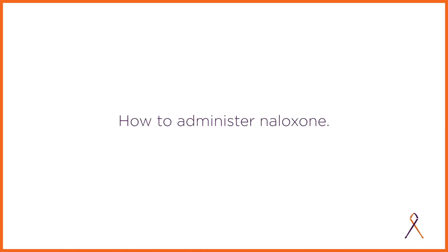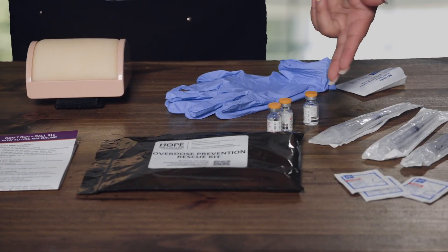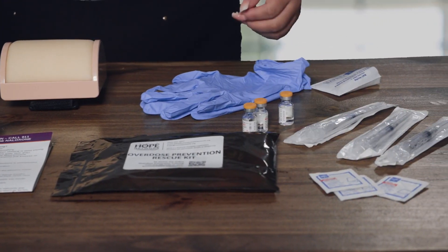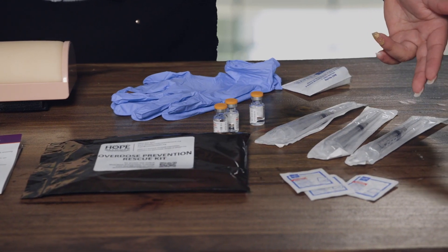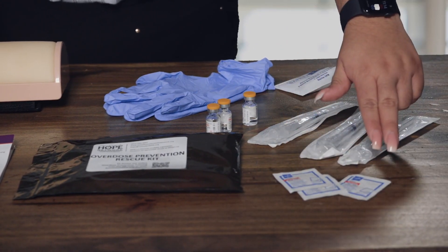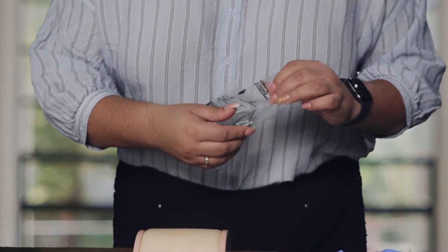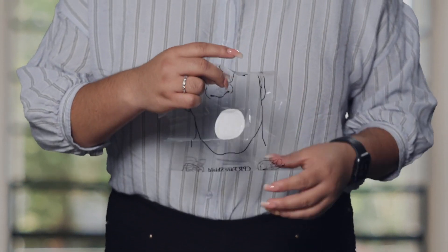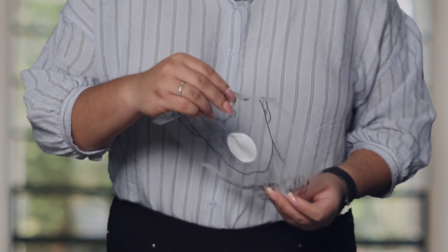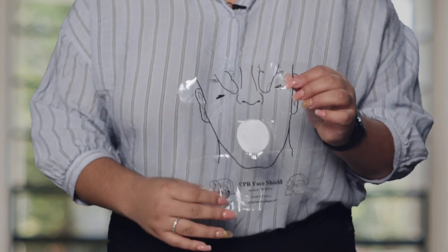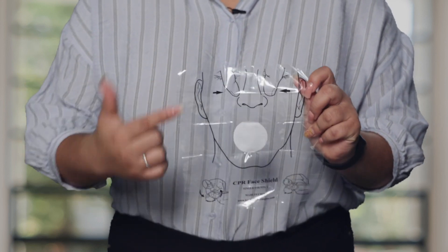You will need to give rescue breaths and prepare the first dose of naloxone. First, get everything out of your kit. You have the three syringes, three alcohol wipes, three vials, the breathing barrier, and your gloves. This is what the breathing barrier looks like — it provides a clear diagram so you can see exactly where to place it over a person's face and mouth.